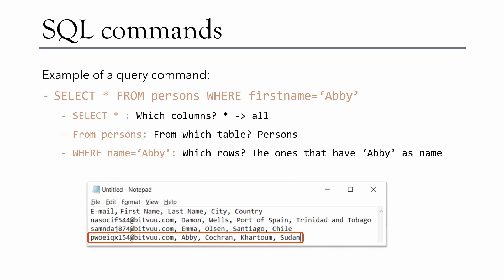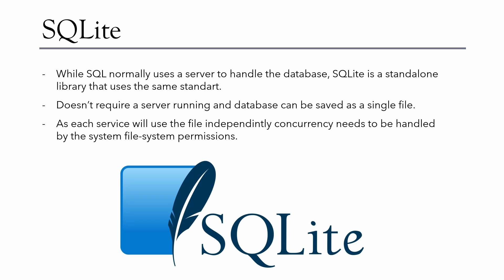The standard implementation of SQL uses a server to handle the database and interactions with it. SQLite is an implementation that doesn't need that server — it only uses a library that you can import into your project, using the same SQL standard. Since it doesn't need a server, it's simpler to interact with and you can save the entire database in a single file on your computer. This does come with some trade-offs, such as concurrency access being more limited, based on file system permissions, to prevent two processes from writing to the same entry simultaneously.